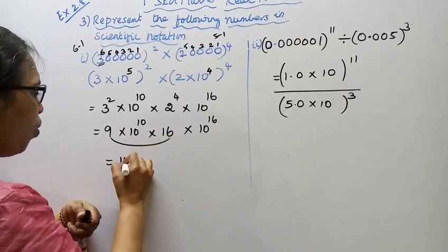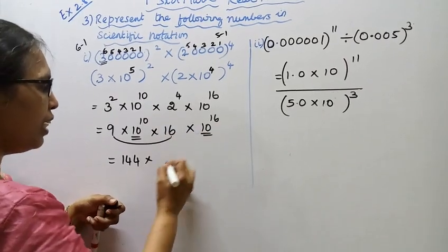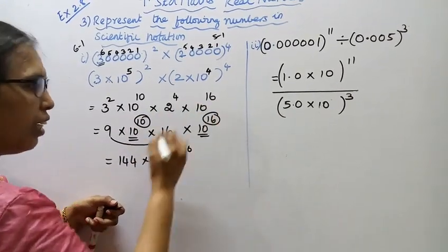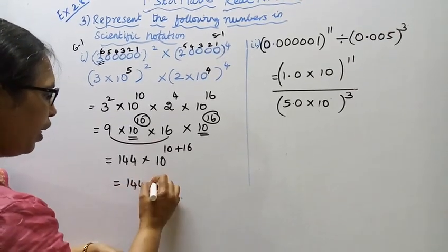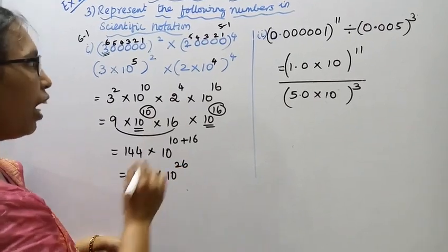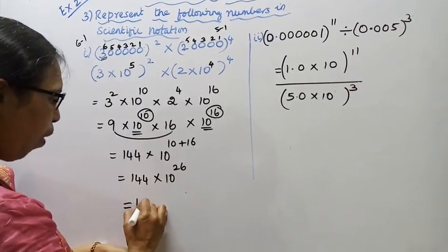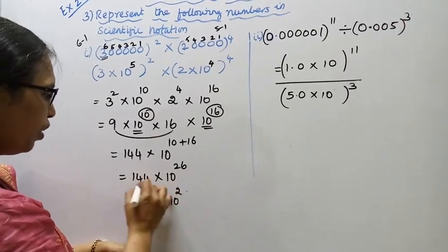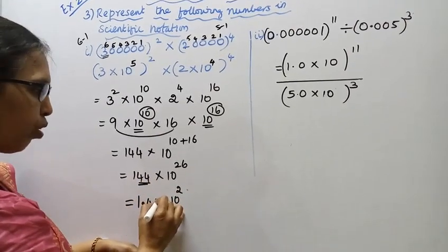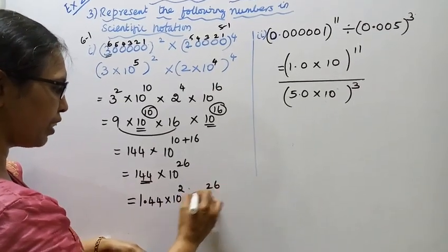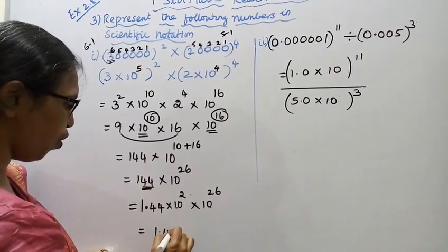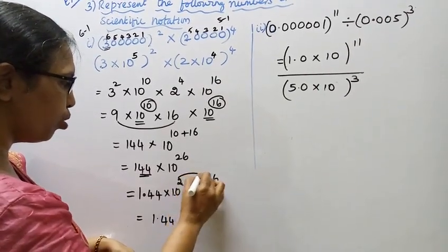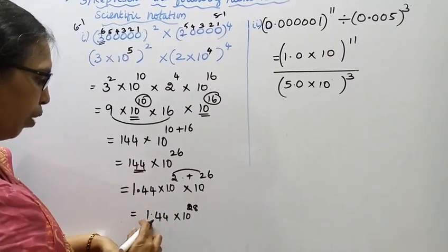Multiply 9 by 16: that gives 144. For the powers of 10: add the exponents, 10 plus 16 equals 26. So we get 144 into 10 to the power of 26. Now converting to proper scientific notation: 144 becomes 1.44 into 10 to the power of 2. So 2 plus 26 equals 28. Final answer: 1.44 into 10 to the power of 28.